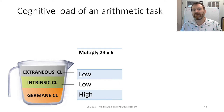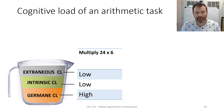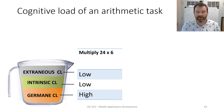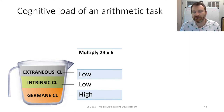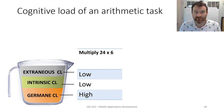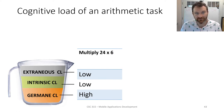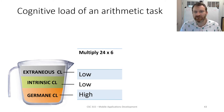Consider the cognitive load of an arithmetic task: multiply 24 by 6. The extraneous cognitive load here is quite low because it's very obvious — I want you to multiply 24 by 6. You don't have to piece together what I'm asking you to do; you can just do it. The intrinsic cognitive load — is it hard to do this? Hopefully not, especially if you have pen and paper. You do 6 times 4, that's 24, carry the 2. 6 times 2 is 12, add 2, and 144 is the answer. Not too hard to do.